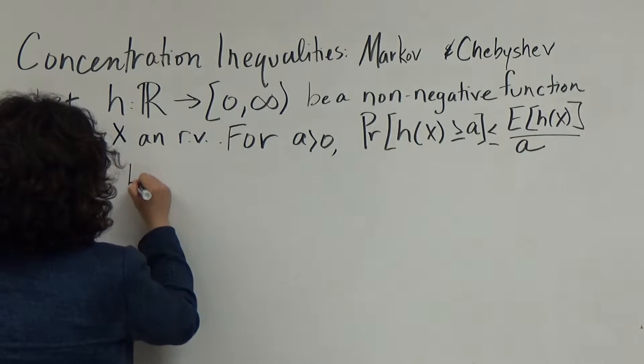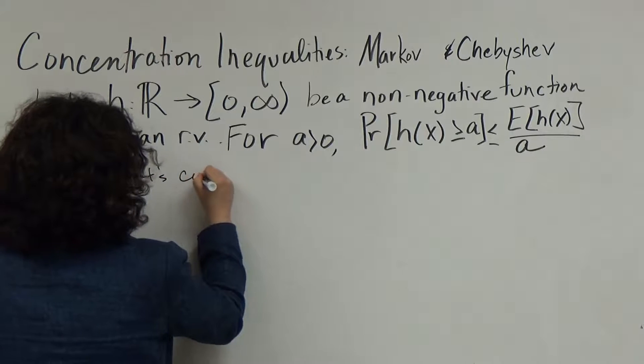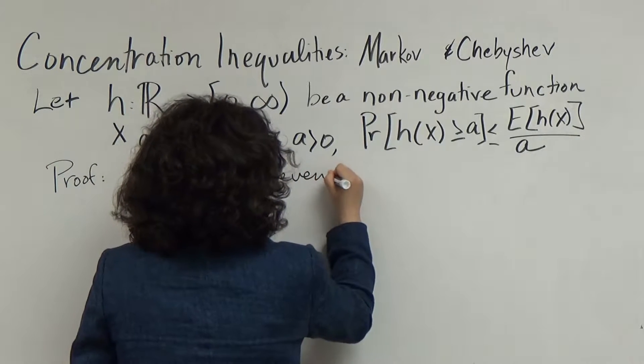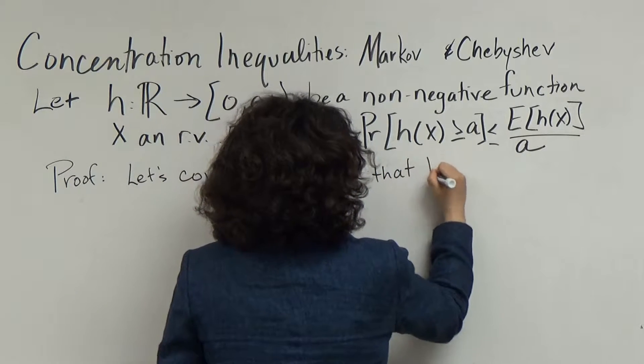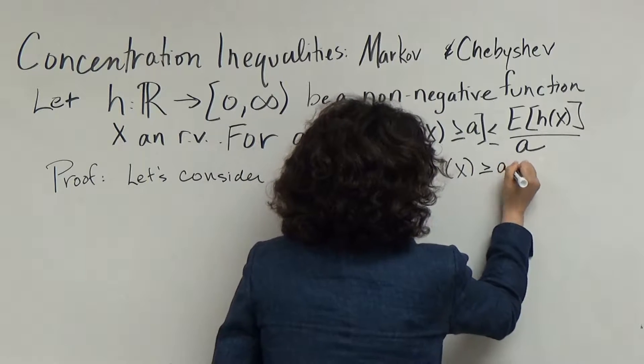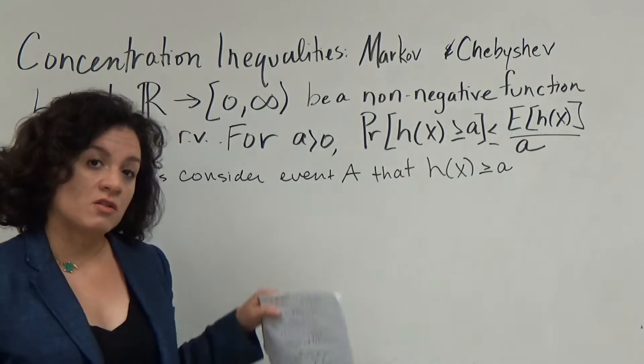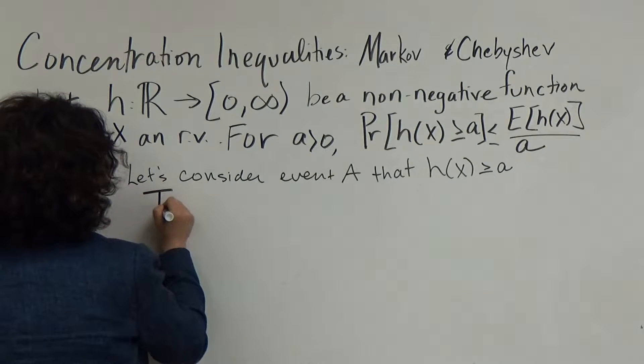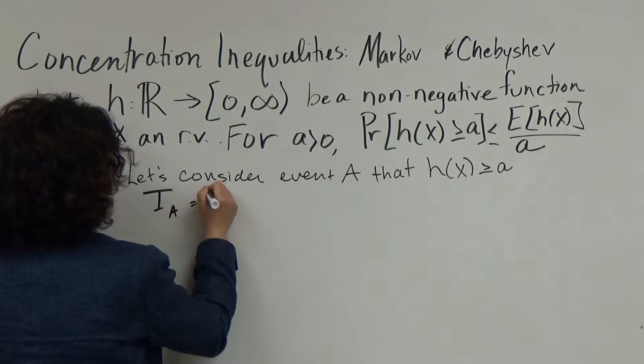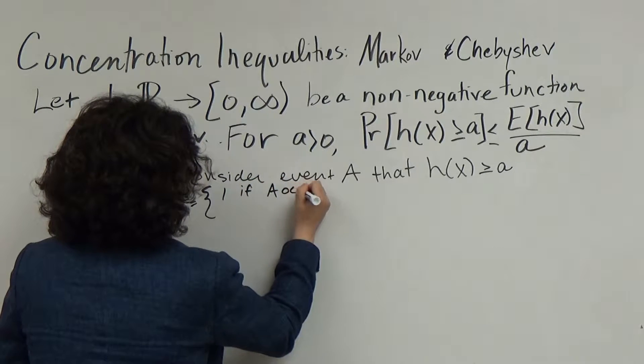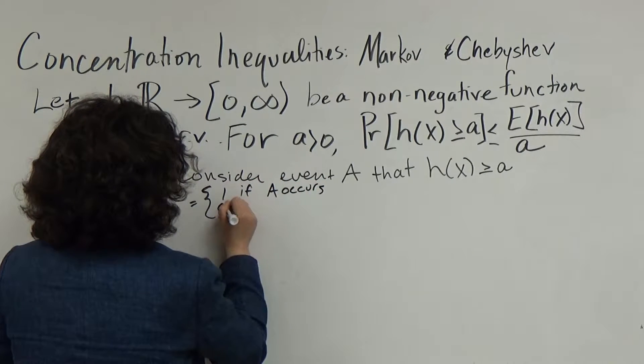Let's consider the event A that h(x) is greater than or equal to a. To do this, we'll consider the corresponding indicator variable, I_A, which is going to be equal to 1 if the event A occurs and 0 otherwise.